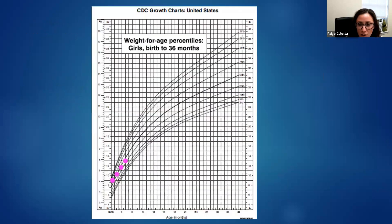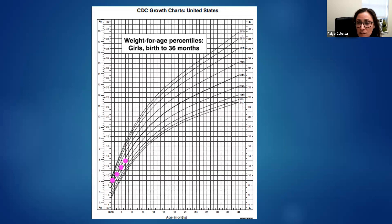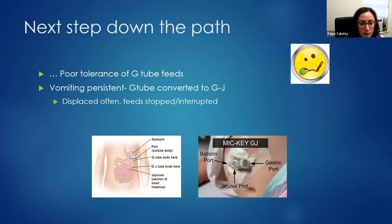Looking back at the growth chart, it's pretty clear in hindsight why a G-tube would be questionable. But unfortunately we see this frequently — it's much easier to compile all her weights on a growth chart and review them in retrospect than to track each individual point in the ER or the doctor's office. I've had several cases where the pediatrician or even a GI doctor wasn't concerned about feeding issues because the weight was okay, but parents self-referred to surgeons and got a G-tube placed.